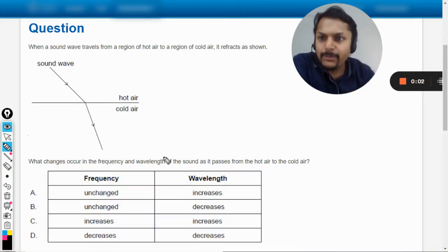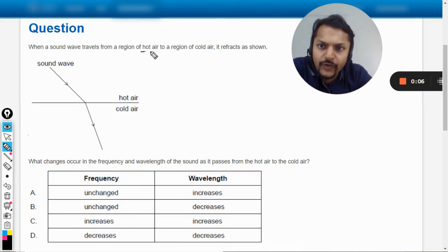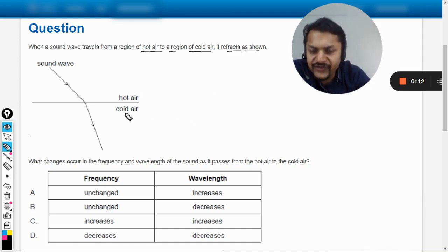Okay dear students, let us see what is happening in this question. When a sound wave travels from a region of hot air to the region of cold air, it refracts as shown. What changes occur in the frequency and wavelength of the sound as it passes from hot air to cold air?